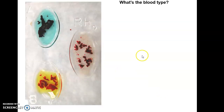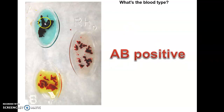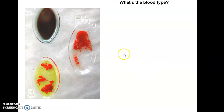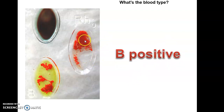Here is another example: well A, well B, well Rh — the blood type is AB positive. Clear agglutination in well A, clear agglutination in well B, clear agglutination in the Rh well. Only if the antigen is present do we get agglutination. A antigen is present, B antigen is present, Rh is present — all three are present, so AB positive. Next example: something happened in the Rh well and in well B, nothing happened in well A — that is B positive.